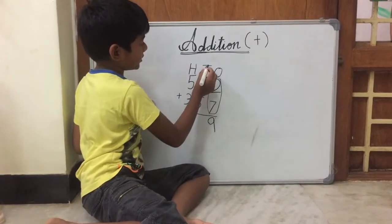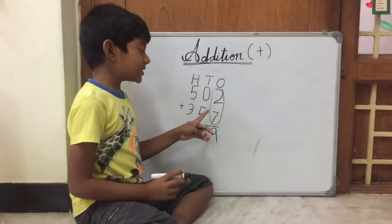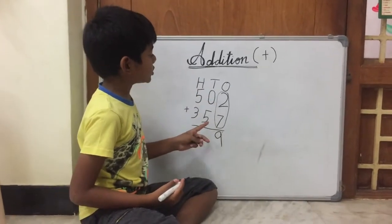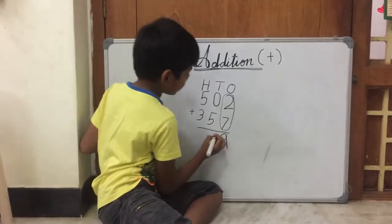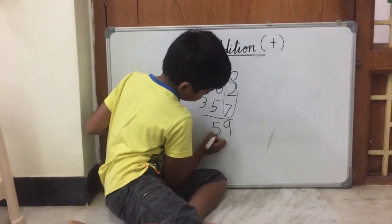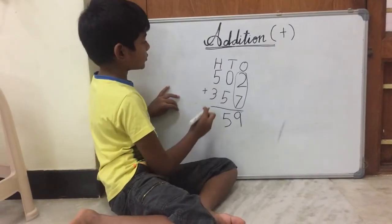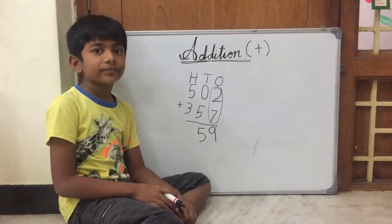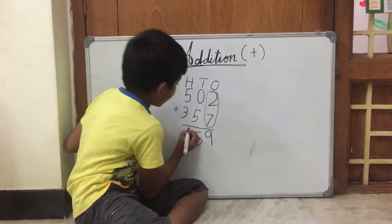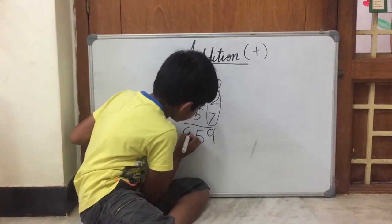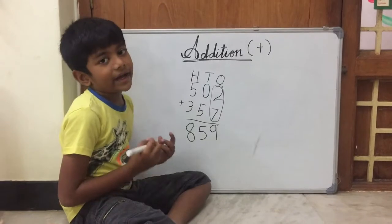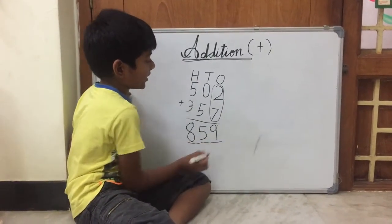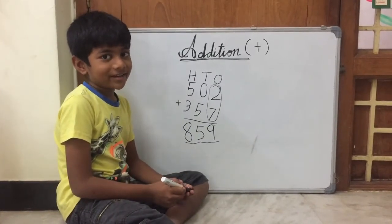Next, we need to add the 10's. What is 0 plus 5? Yes! 0 has no value, so we should write 5 itself. 5 right here. So the next one is the 100's. So what is 5 plus 3? Yes! It is 8. So the answer is 859. It's very easy, right?